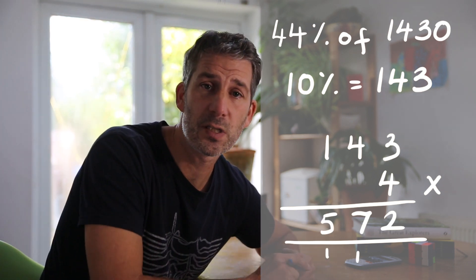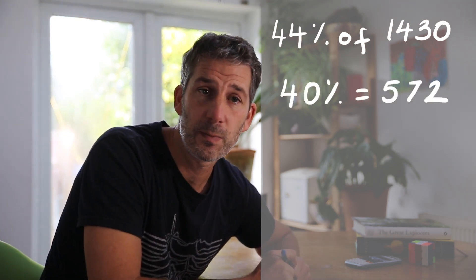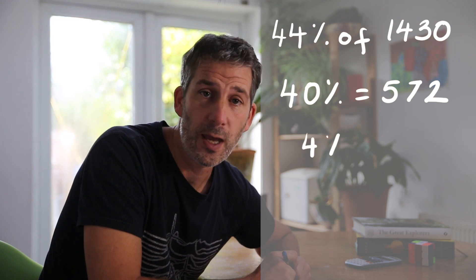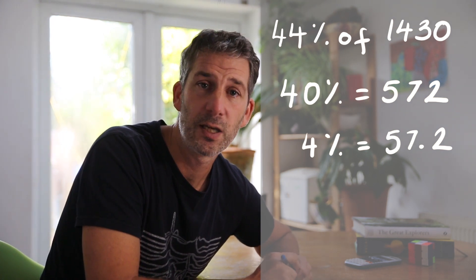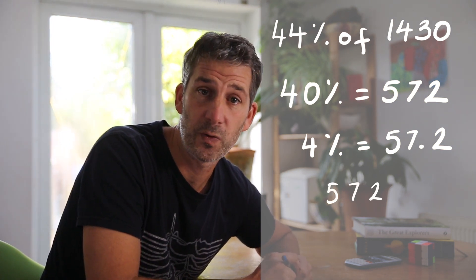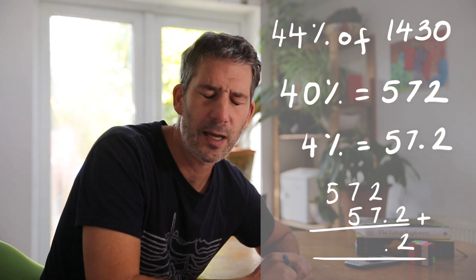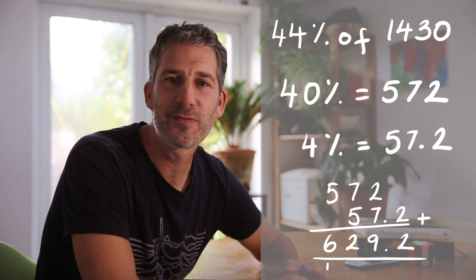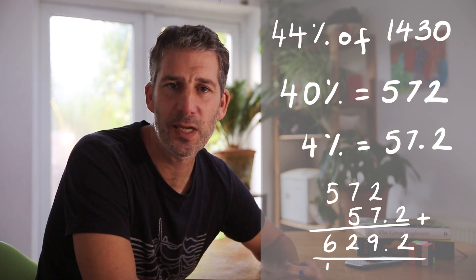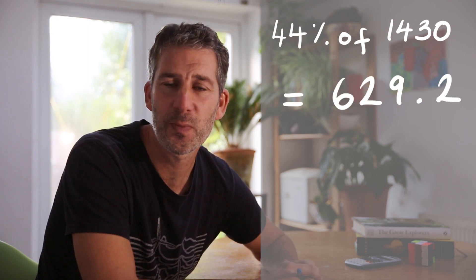4% is just 10 times smaller than that. I'm going to divide by 10, in other words. So that'll give me 57.2, and if I'm trying to find 44%, I just add those two together. So 572 add 57.2, which I think gives us 629.2. So 44% of 1430 is 629.2.